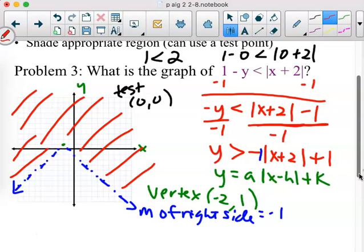So 1 minus 0, that's 1. And 0 plus 2 is 2 and the absolute value of 2 is 2. Is 1 less than 2? It is. So that means I have to shade where 0,0 is, which means I'm shading outside the V. And again, I can't turn it sideways and do the nice shading you can do with pencils and stuff like that. But definitely people could make out that's where I wanted the shading.